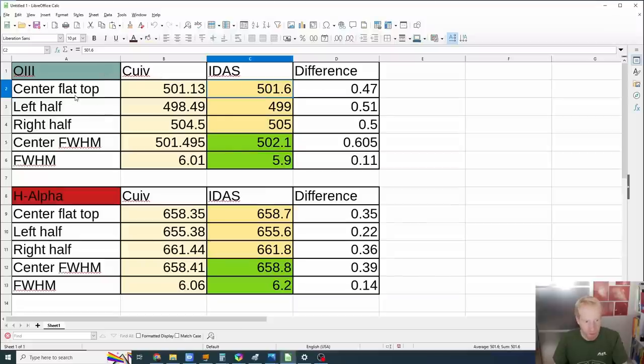You can see for my oxygen-3 filter at the center of the flat top at 501.13, IDAS is more or less at 501.6, so the difference of roughly 0.5 nanometers between the measurements, which is pretty nice. You can see similar things for left half, right half, with the difference of 0.5 nanometers. The center of the full width half max we then see a difference of 0.6 nanometers roughly. And the full width half max itself - I measured 6 nanometers, they measured 5.9 nanometers. Again, not all of those figures will make perfect sense because I had to eyeball some of the figures from the printed out charts, but we are really very much in the same neighborhood, right?